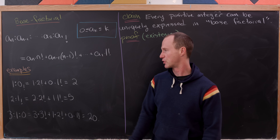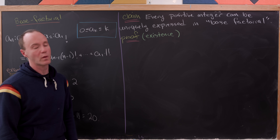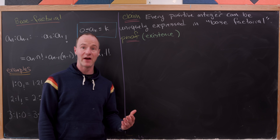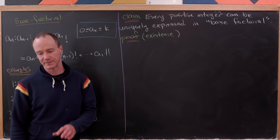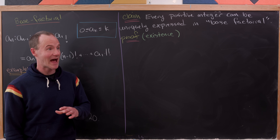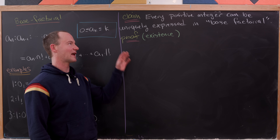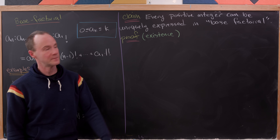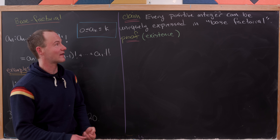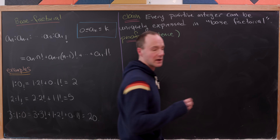I think this is pretty interesting, and it leads us initially to the following question: can we express every number in this base factorial system? And if we can, is that expression unique? In fact, the answer to both of those questions is yes, as highlighted by this claim that we'll prove — every positive integer can be uniquely expressed in this base factorial number system.